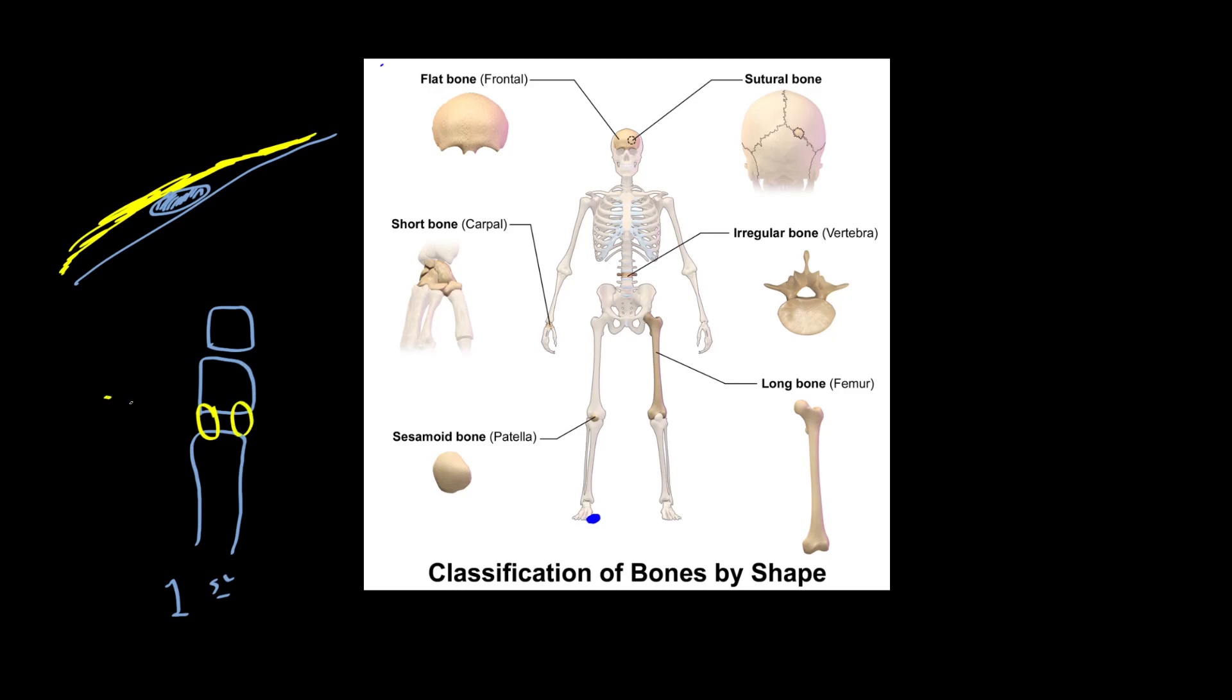Those sesamoid bones sit underneath right here, like this. And most people have two. Occasionally, some people, such as me actually, have three. So like this inner one will be two separate, called bipartite sesamoids. Those may or may not play a role in the development of some foot problems. But broadly, there's these categories of bones that are useful to think about in terms of how the type of the bone relates to its structural role.